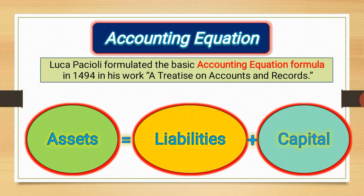Assets are the properties and belongings of the business. Liabilities are the payables of the business. Capital is the amount or assets which the owner invests in the business. These three things tell us the financial position of the business.